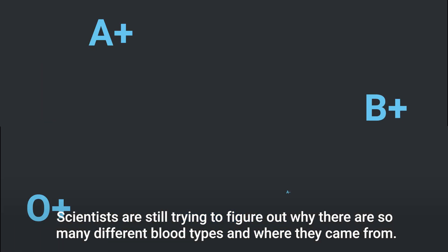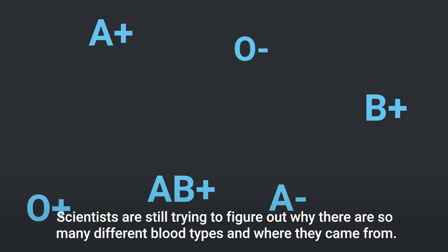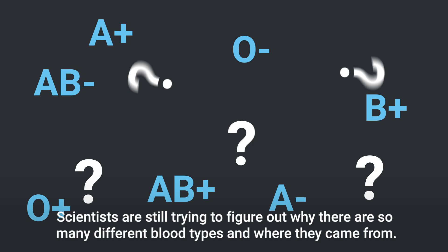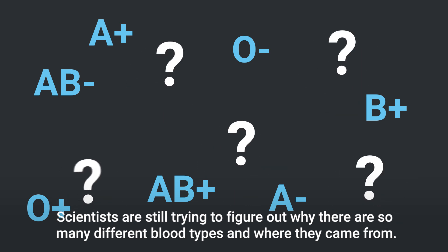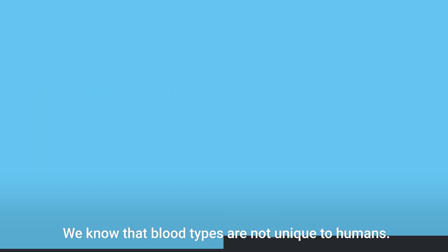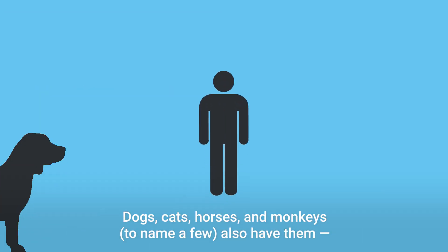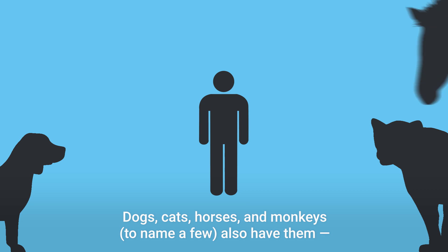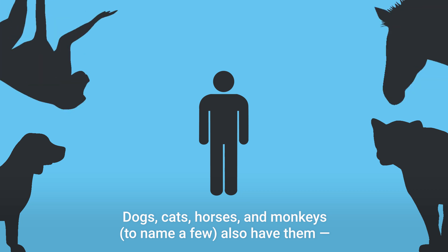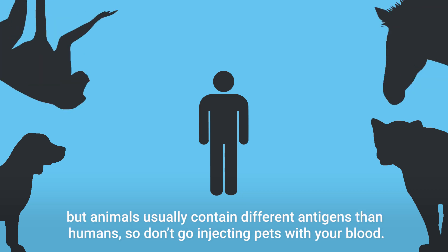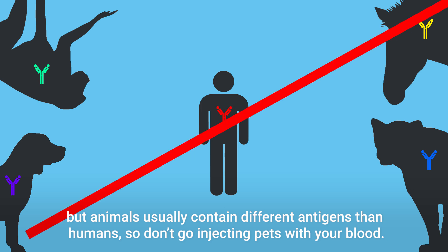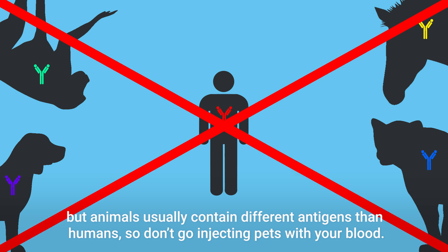Scientists are still trying to figure out why there are so many different blood types and where they came from. We know that blood types are not unique to humans — dogs, cats, horses, and monkeys, to name a few, also have them. But animals usually contain different antigens than humans, so don't go injecting pets with your blood.